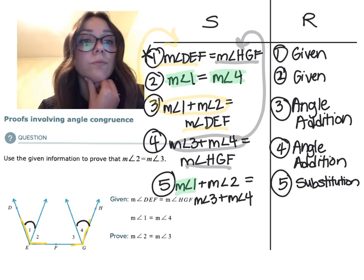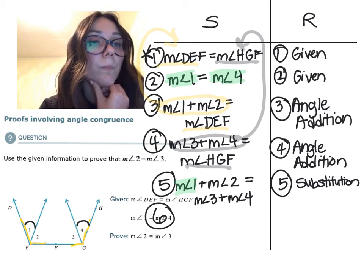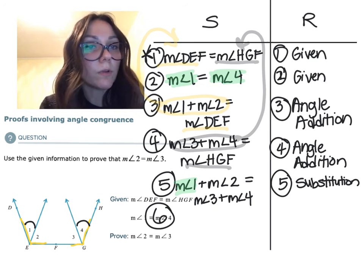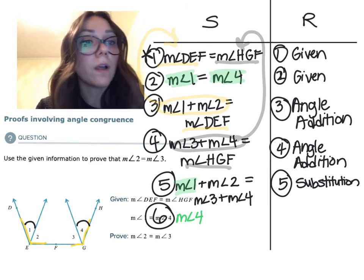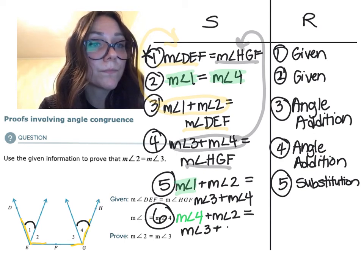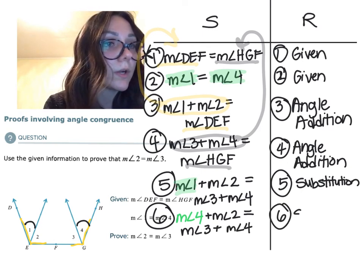So let's rewrite statement five for statement six. But instead of the measure of angle one, I'm going to write its equivalent measurement, the measure of angle four. Otherwise, I am rewriting exactly what I wrote in statement five. All I did was substitute that one little part.